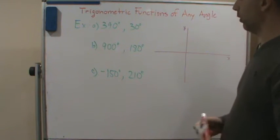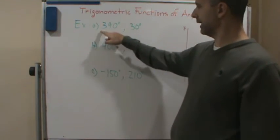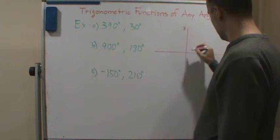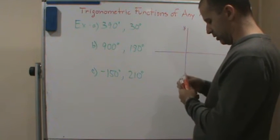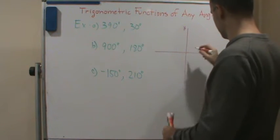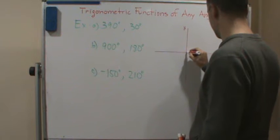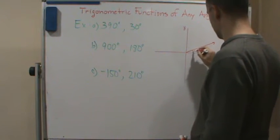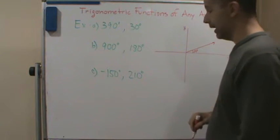Okay, so here we're going to go 390 degrees and 30 degrees. Well, where's 30 degrees? Let's say 30 degrees is right here. Okay, so let's say this is 30 degrees, right? So here's 30 degrees.